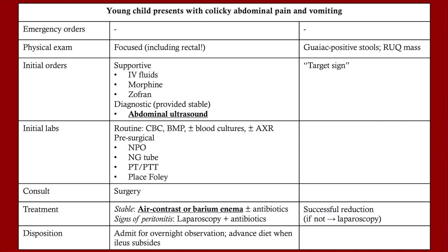Here is the CCS flow: if you have a young child presenting with colicky abdominal pain and vomiting, get a focused exam including a rectal exam. You'll find guaiac-positive stools and possibly a sausage-shaped mass in the right upper quadrant. Start supportive care with IV fluids, morphine, and Zofran. Order an abdominal ultrasound — you'll see the target sign. Get initial labs: CBC and BMP. You may get blood cultures and an abdominal X-ray, but with a typical ultrasound finding you can rely on that. Order pre-surgical labs: type and crossmatch, PT, PTT.